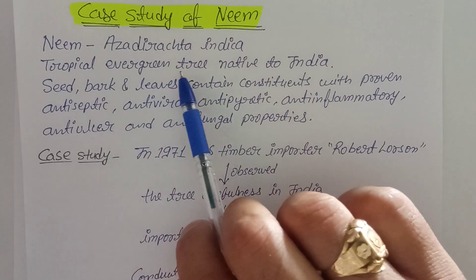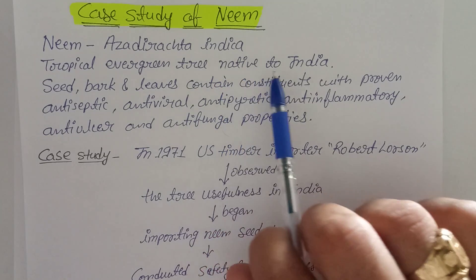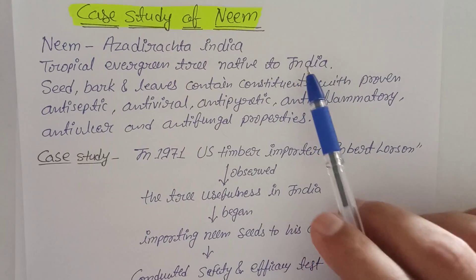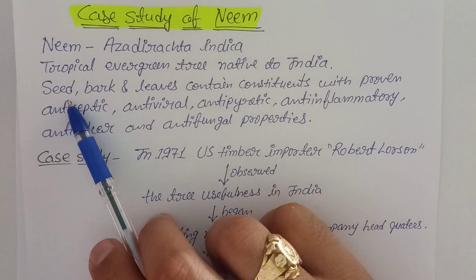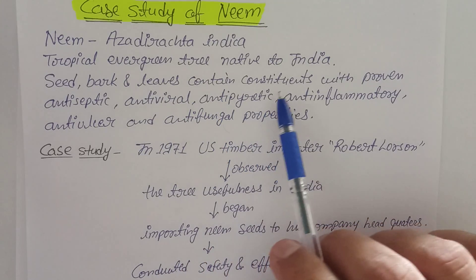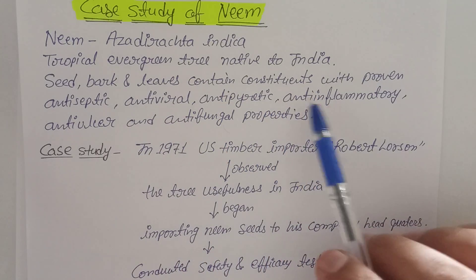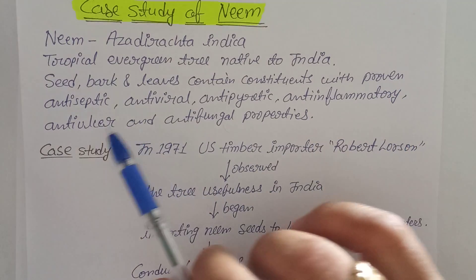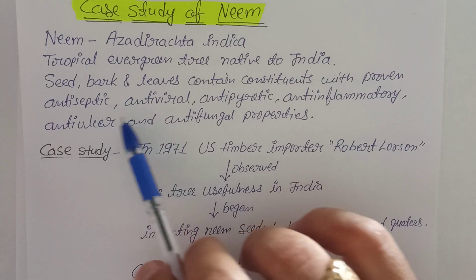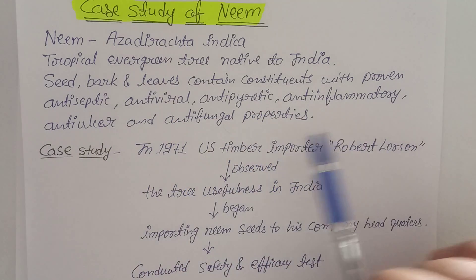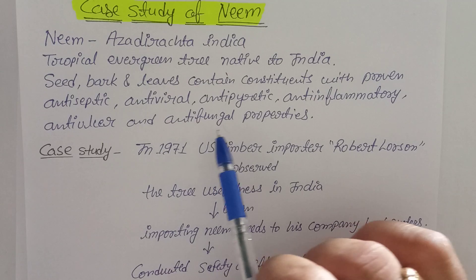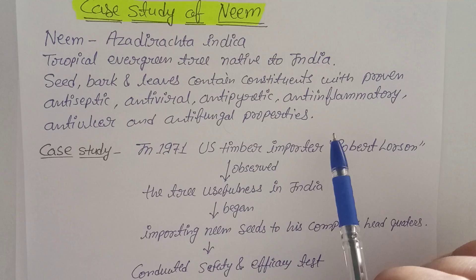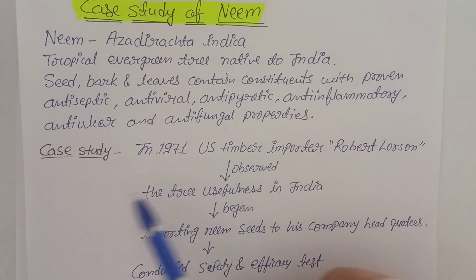Neem is a tropical evergreen tree, native to India — India is its geographical source. We use different parts like seeds, bark, and leaves, which contain various constituents or compounds that have been proven to have antiseptic, antiviral, antipyretic, anti-inflammatory, anti-ulcer, and antifungal properties. These are all topics we study in pharmacognosy as well.